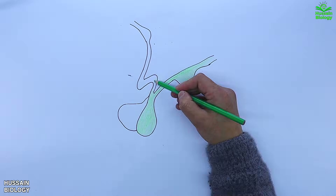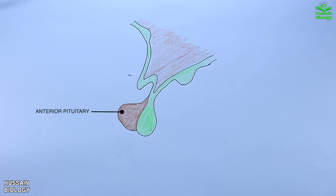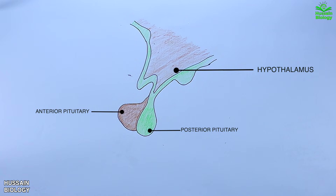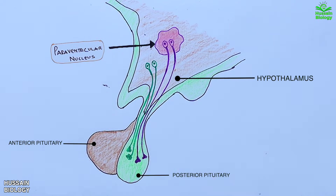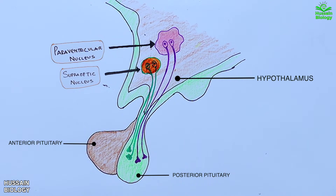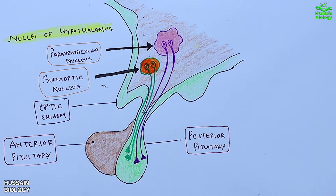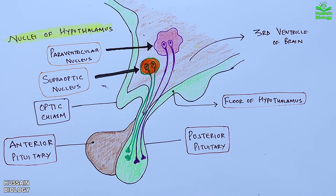The most inferior portion of the sella turcica is known as the hypophysial fossa, where the pituitary actually resides. In the structure of the pituitary gland, we have the anterior pituitary on the left and posterior on the right. The hypothalamus contains neurosecretory cells which extend to the posterior pituitary. These arise from the paraventricular nucleus and the supraoptic nucleus of the hypothalamus. Also visible are the optic chiasm and the third ventricle of the brain.